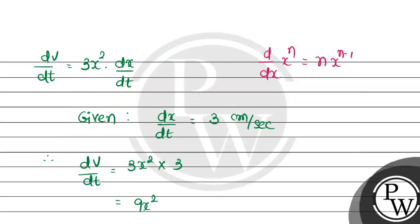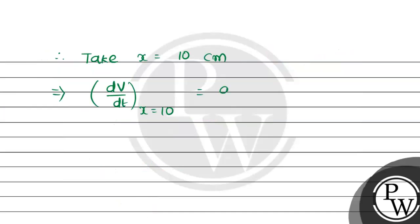We have the equation 9x². So that is 9 × 10² = 9 × 100 = 900 cm³ per second.